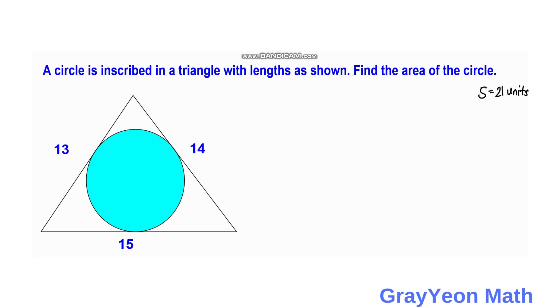Next, we use Heron's formula since we already know the semi-perimeter. The area equals the square root of S times (S minus A) times (S minus B) times (S minus C).